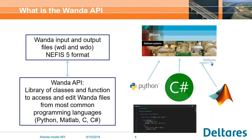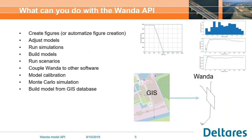With this library of classes, we can basically load a Wanda case, manipulate it, make changes, save it, and run simulations — which opens a whole world of possibilities. For example, we can create figures: run the Wanda case, read it with the Wanda API, get the results, and make a plot. Looking further, you can also completely automate your figure creation. If you have to do a report with many cases and figures, you normally need to copy and paste all the figures manually.